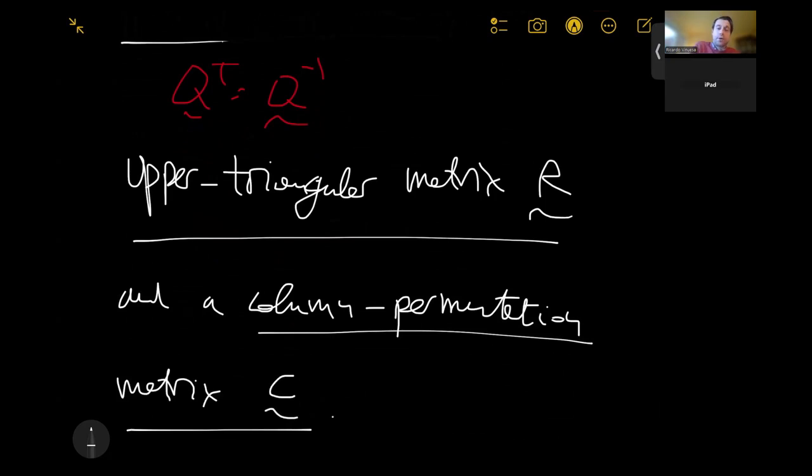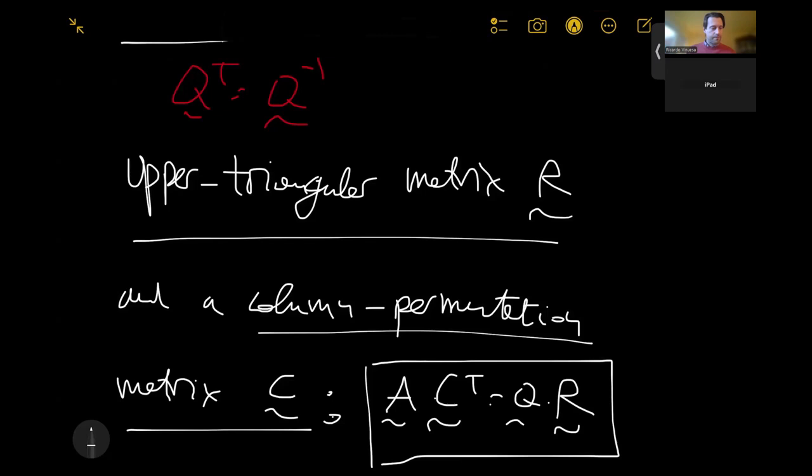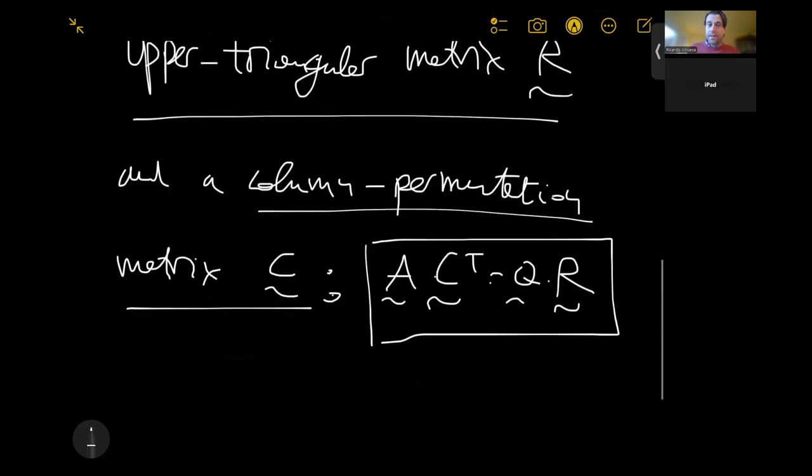This matrix is called C, not by chance. This is going to be actually our measurement matrix. So I'm going to have my original matrix A multiplied by this column permutation matrix transpose C, and that's going to equal Q times R.